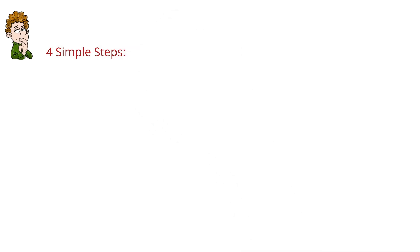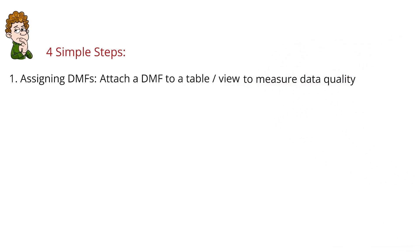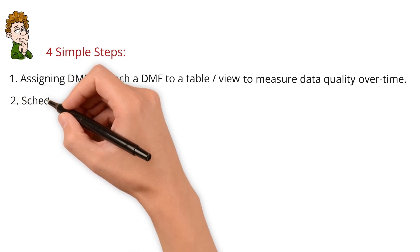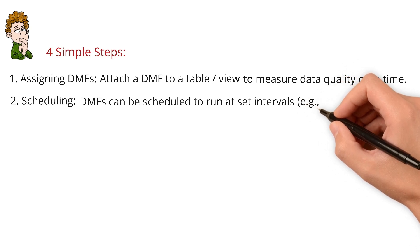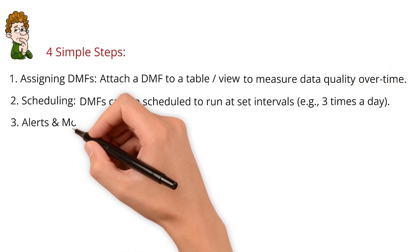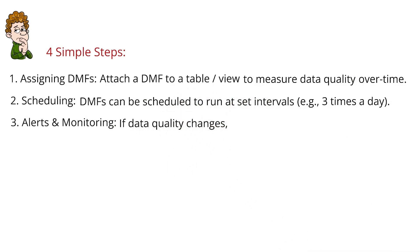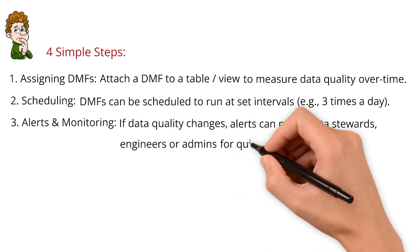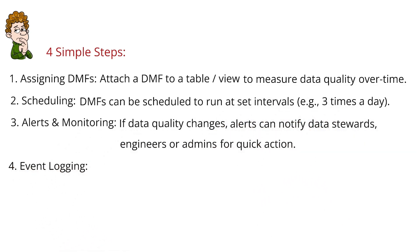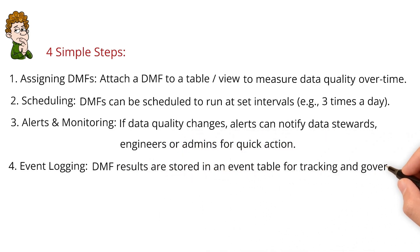How does it work? Let me break it down into four simple steps. First, assigning data metric functions — you can attach a DMF to a table or view to measure data quality over time. Second, scheduling — DMFs can be scheduled to run at set intervals, let's say three times a day. Third, alerts and monitoring — if data quality changes, alerts can notify data stewards, engineers, or admins for quick action. Fourth, events logging — data metric function results are stored in an event table for tracking and governance.